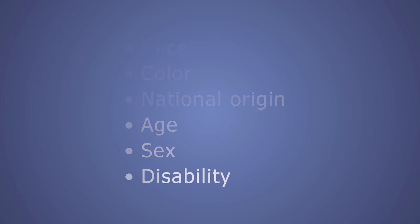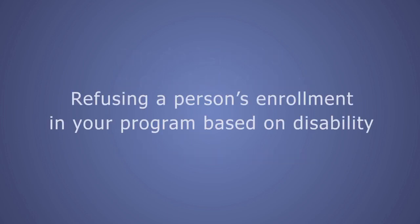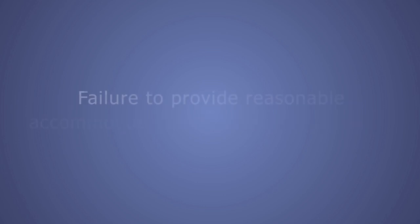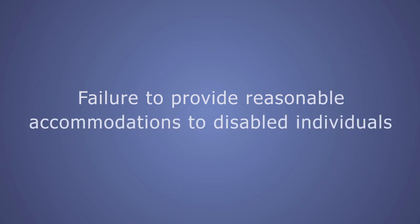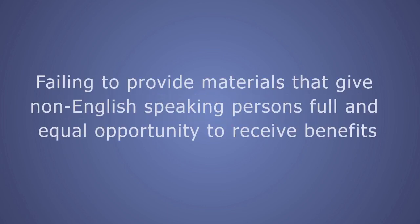and disability. In addition, the state of Rhode Island has two additional protected classes: religion and sexual orientation. Here are some examples of discrimination: refusing a person's enrollment in your program based on disability; failure to provide reasonable accommodations to disabled individuals; serving meals at a time, place, or in a manner that is discriminatory; and failing to provide materials that give non-English speaking persons full and equal opportunity to receive benefits.